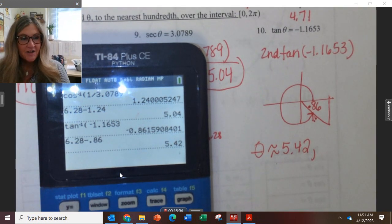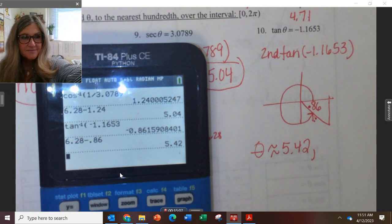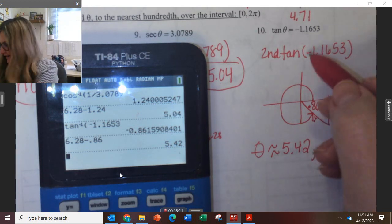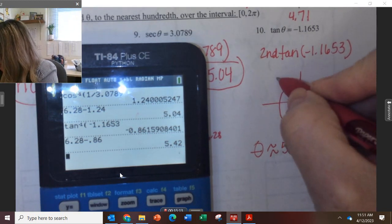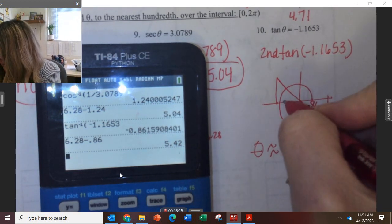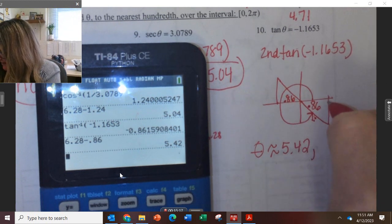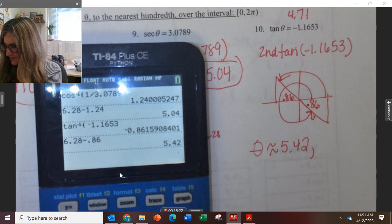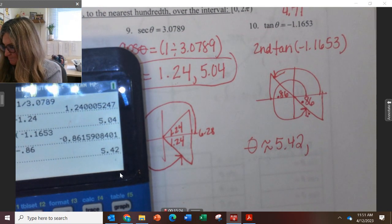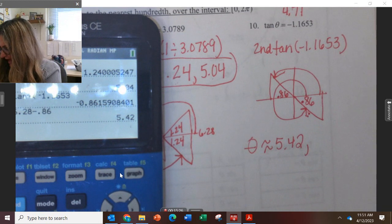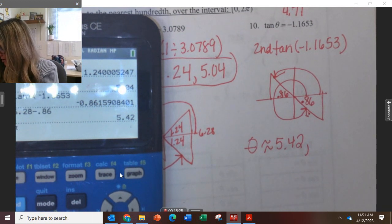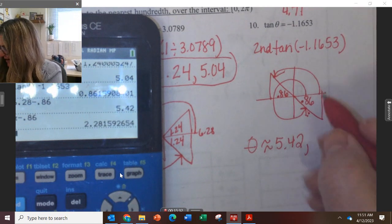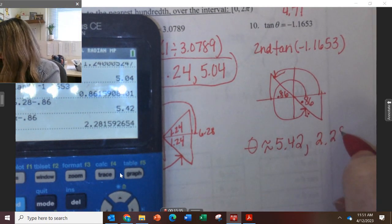Do we know which other quadrant we're going to need to be in to get this? Quadrant 2. I need tangent negative, that's in quadrant 2. I still have the same reference angle, 0.86. How do I find that angle from there to there? I have to do pi or 3.14 minus 0.86, and my other answer is 2.28.